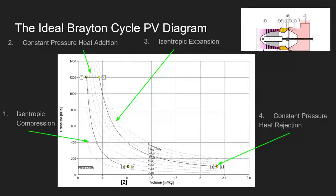The Brayton cycle can be shown on what's called the pressure-volume, or PV, diagram. The first thing to notice is that this is an open cycle — air enters from the outside environment and goes through the thermodynamic process stages of compression, combustion, and expansion. Whatever energy is left in those gases is then vented out into the atmosphere, where they dissipate and become part of the surrounding environment.